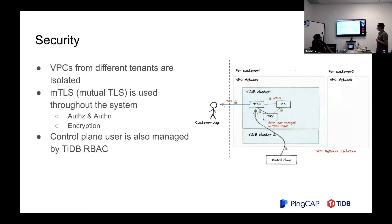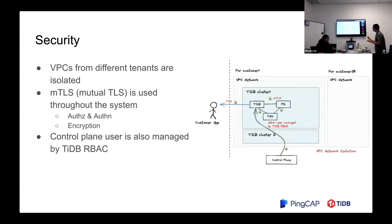For security — security is paramount in cloud, because you are putting your resources away from your own data center into shared resources. For different customers, clusters are isolated by VPC networks. Within the same VPC, we also use mutual TLS across the nodes — all nodes are issued a certificate and know exactly who's calling them and who can call them. TLS also provides encryption, so even if someone has access to the network, it won't cause much damage.